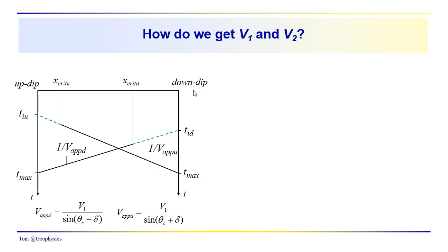We're using subscripts to indicate the location of the source. 'U' refers to the source in the up-dip location; 'D' means the source is in the down-dip location. We should step back and note that up-dip and down-dip — we probably don't know initially. This could be forward/reverse direction, or location A and B, or location one and two. We really don't know until we collect and analyze our data, after which the up-dip and down-dip directions become fairly obvious.